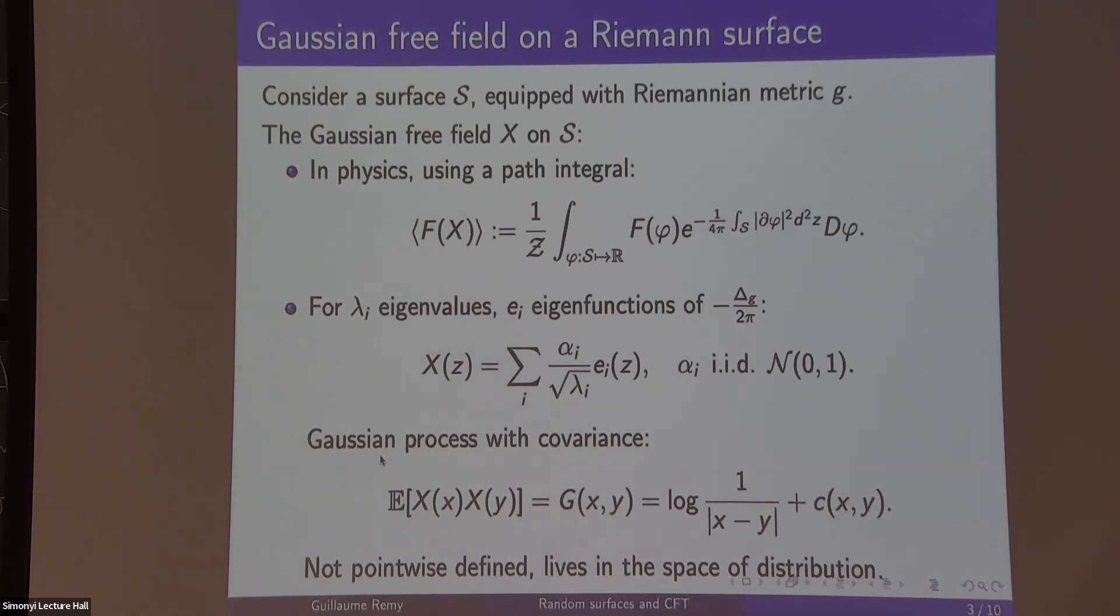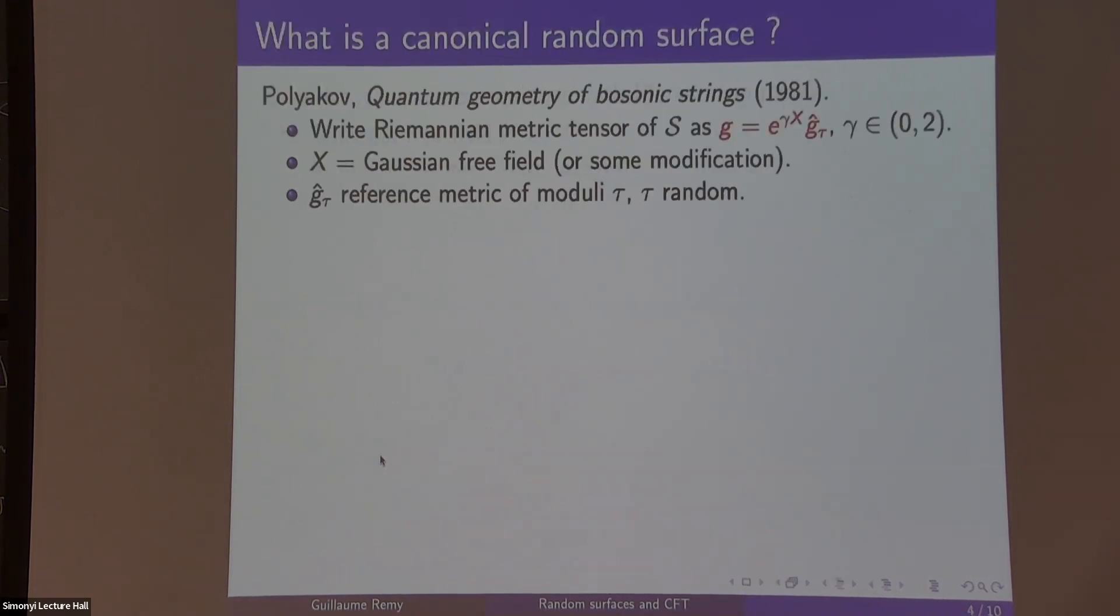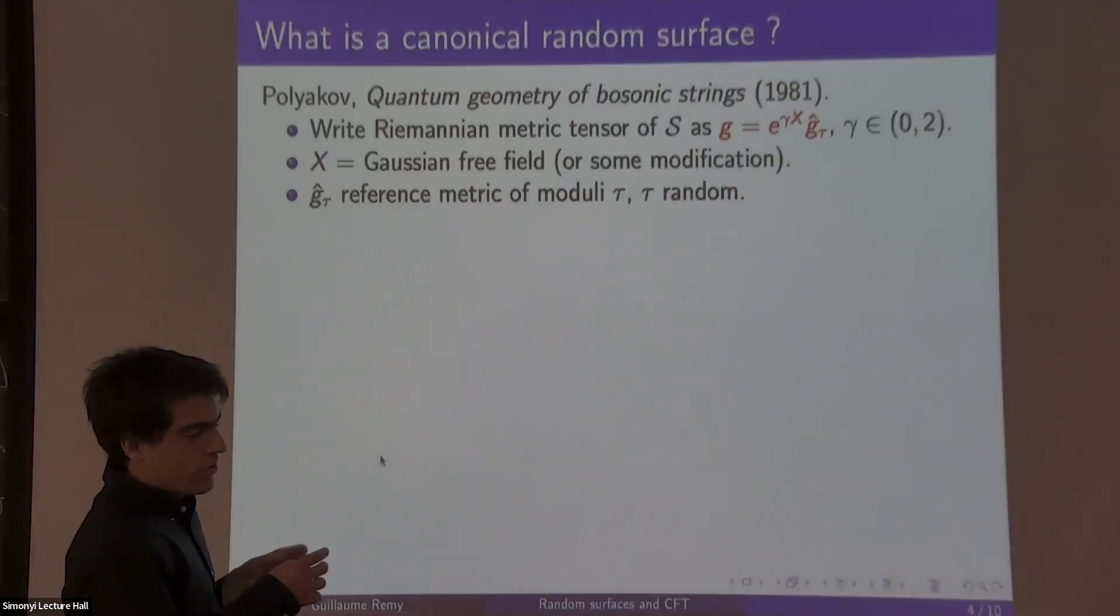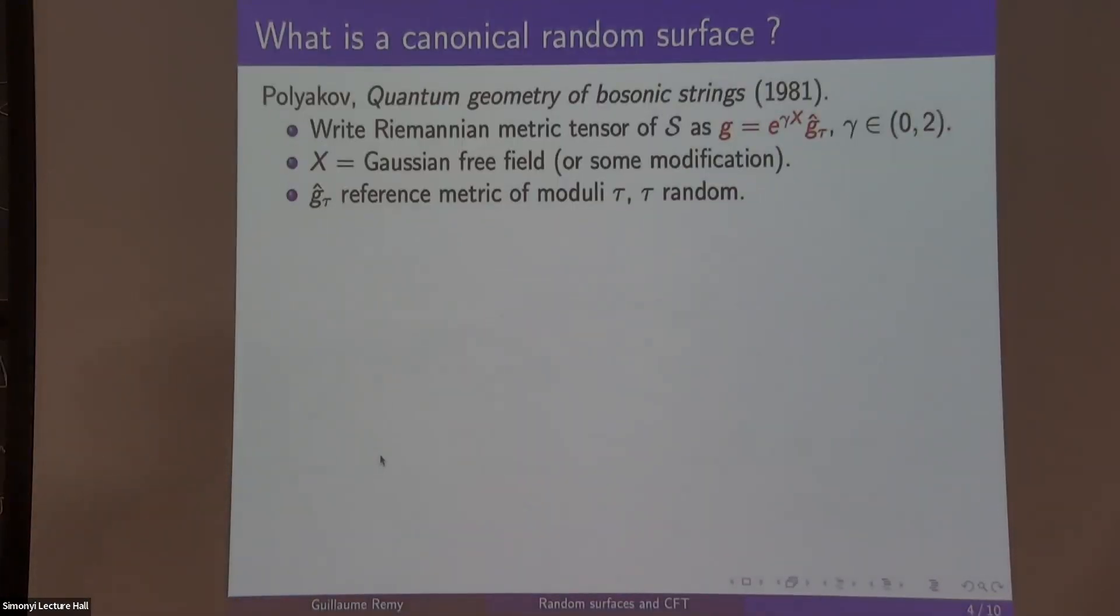So that's what is the Gaussian free field. Now let's look at the problem of what is a random surface in two dimensions. A first answer was given in physics in Polyakov's famous '81 paper. His model of a random surface is a random Riemannian metric tensor.